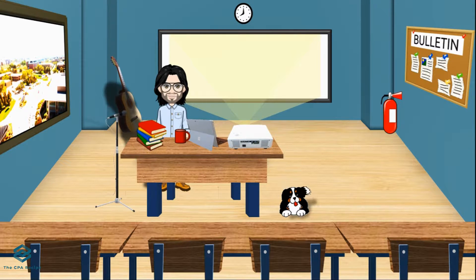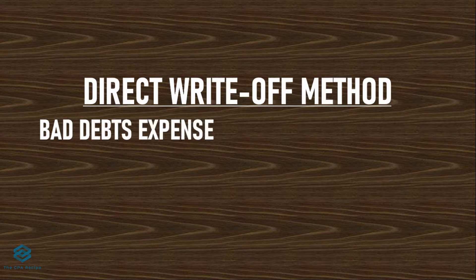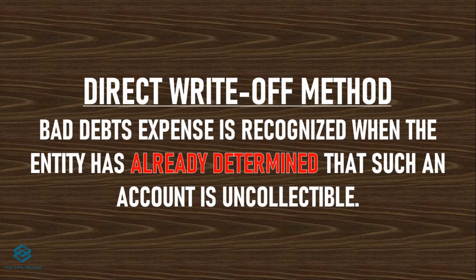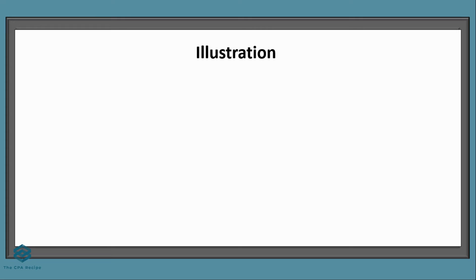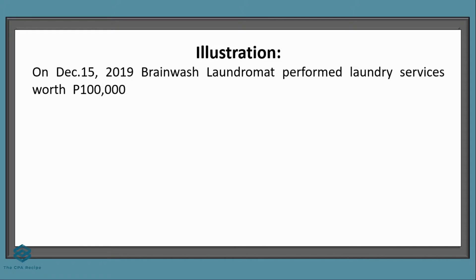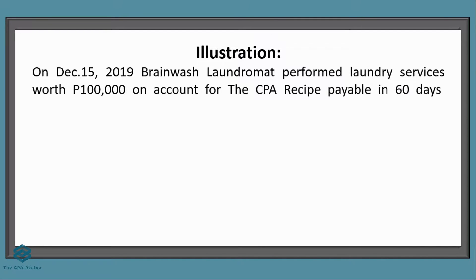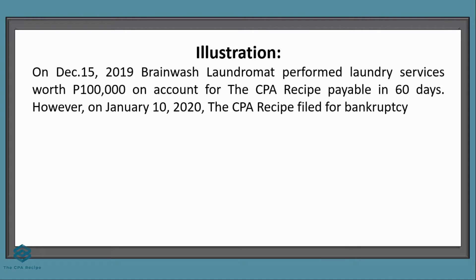Under the direct write-off method, we record bad debts when the business has already determined that an account is already uncollectible — meaning we already know that we cannot collect that portion of the receivable. For example, on December 15, 2019, Brainwash Laundromat performed laundry services worth $100,000 on account for the CPA recipe, payable in 60 days. However, on January 10, 2020, the CPA recipe filed for bankruptcy.